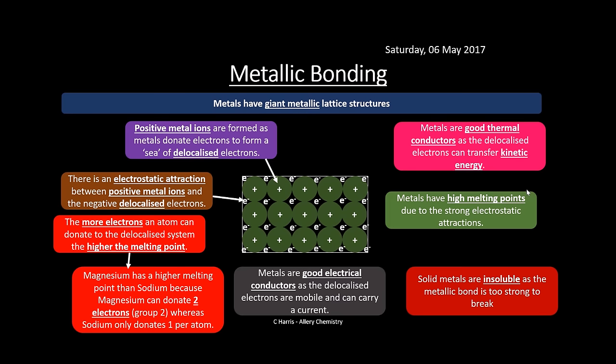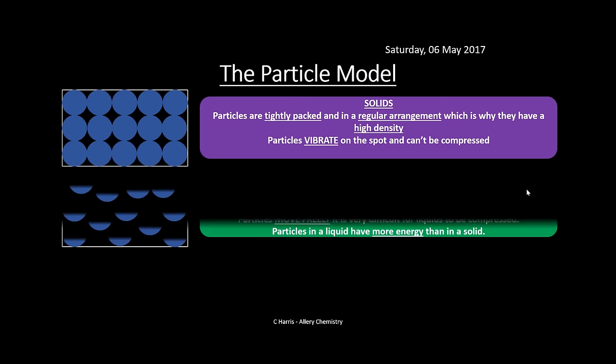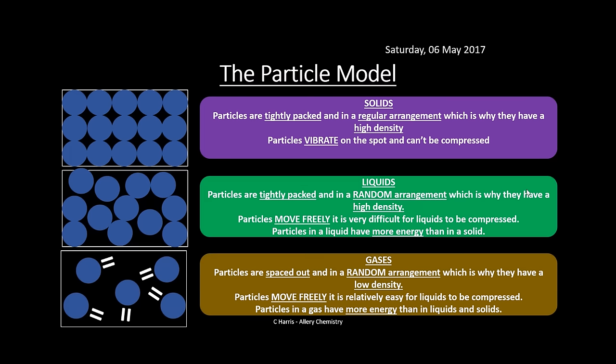Metals have high melting points due to strong electrostatic attractions between delocalized electrons and positive metal ions. Solid metals are insoluble as the metallic bond is far too strong to break. Looking at the particle model: solids are tightly packed in a regular arrangement with high density, vibrating on the spot, unable to be compressed. Liquids are also tightly packed with random arrangement and high density — particles move freely and slide over each other, difficult to compress. Gases are very spaced out with random arrangement and very low density, particles moving freely with much more energy.